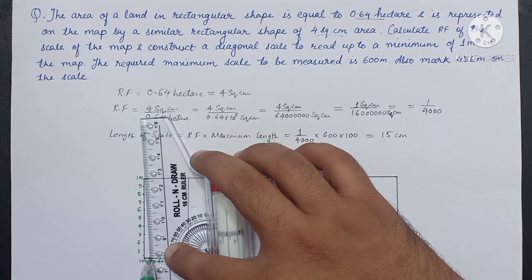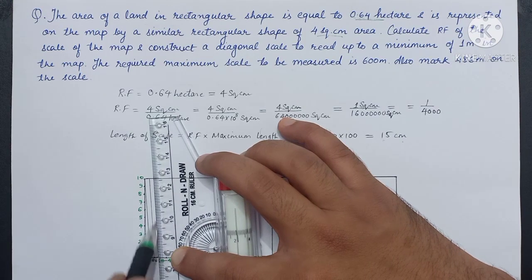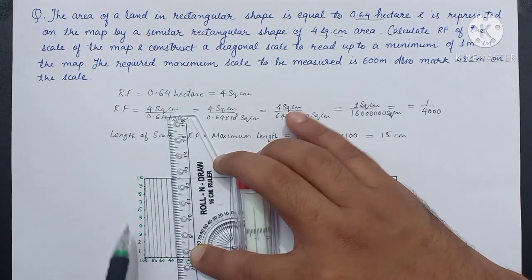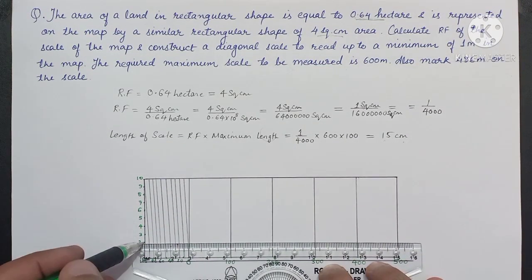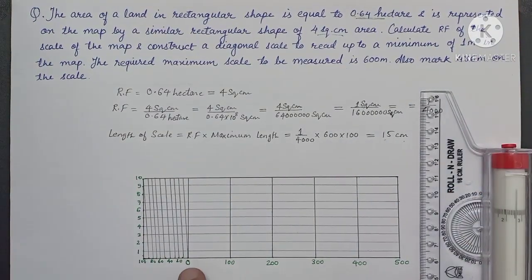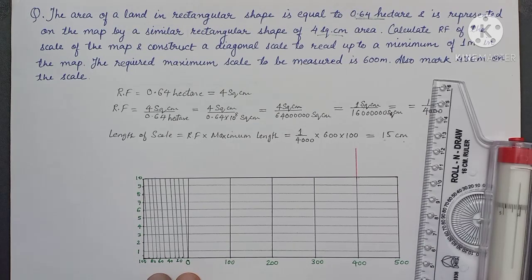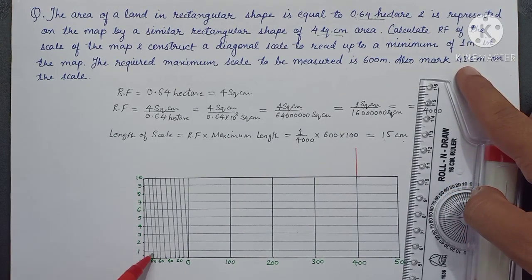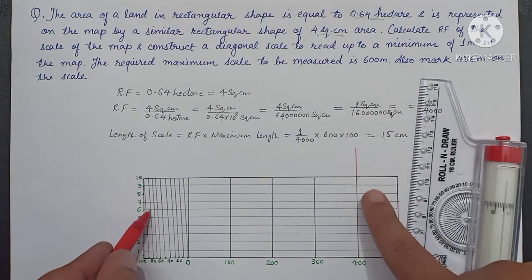Draw parallel lines from each point. Now we need to measure 486 meters. Measuring from the zero point to the right hand side we get 400 meters, then from zero to the left hand side we have 80, for 86. We project this point until it intersects line number 6, which gives us 86, so we get a total dimension of 486 meters.